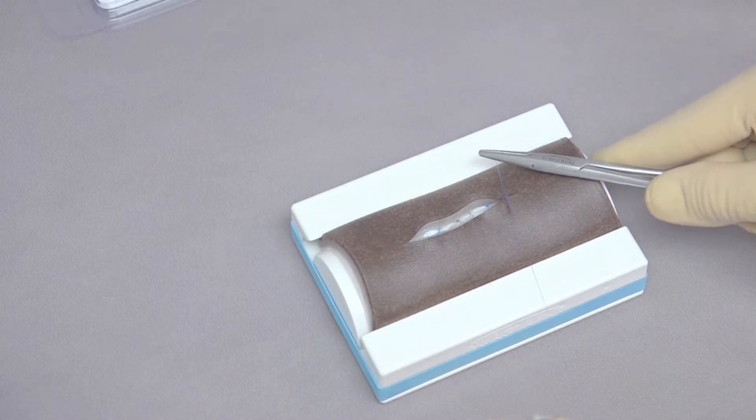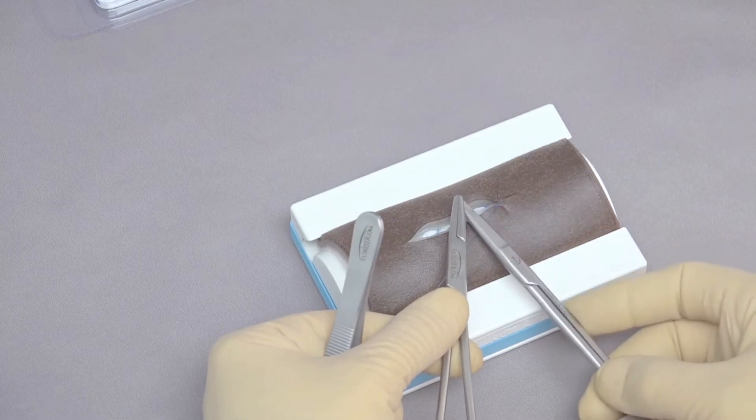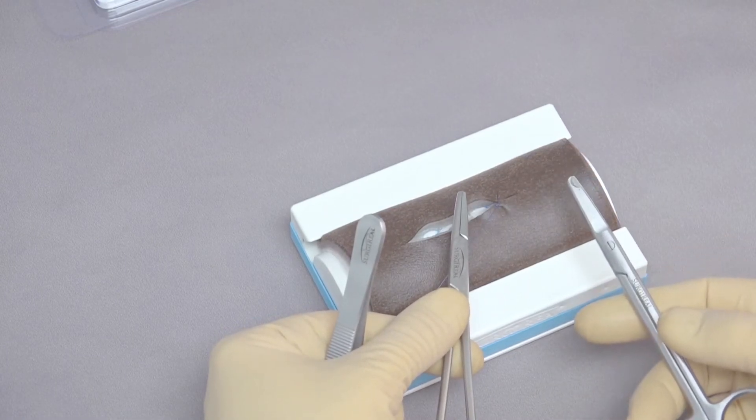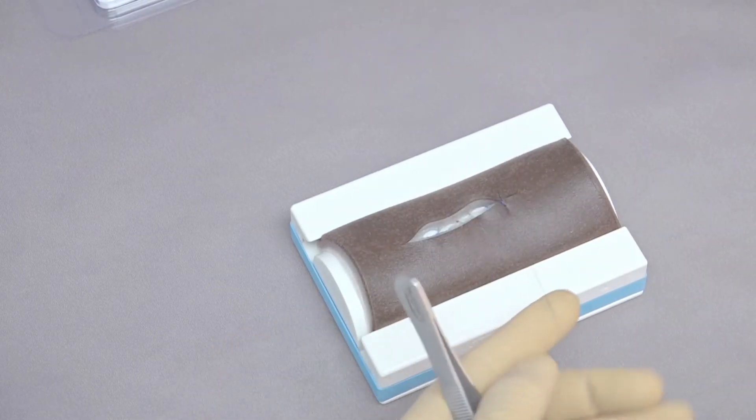If this were an interrupted pattern, I'd cut both ends of the suture right now and be done. But because we're going to form a continuous pattern, I'm just going to cut the short end and we'll continue on with the long end.